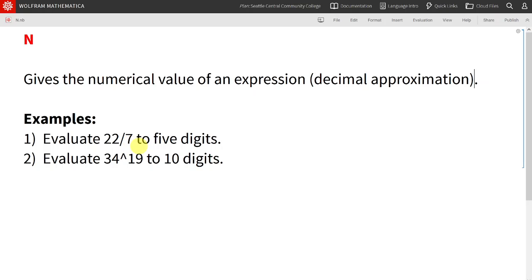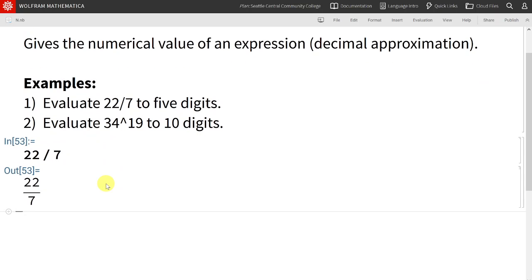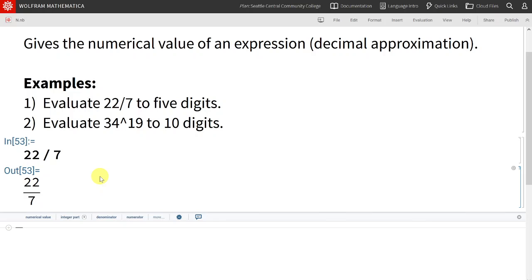First, let's evaluate 22 over 7 to 5 digits. First, let's just look at what happens when I type into Mathematica 22 over 7. Mathematica just outputs the simplified version of the fraction 22 over 7, which is not that useful if I want to find the numeric value of this.